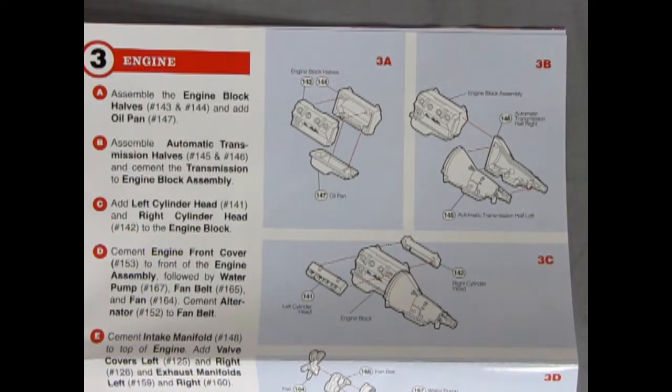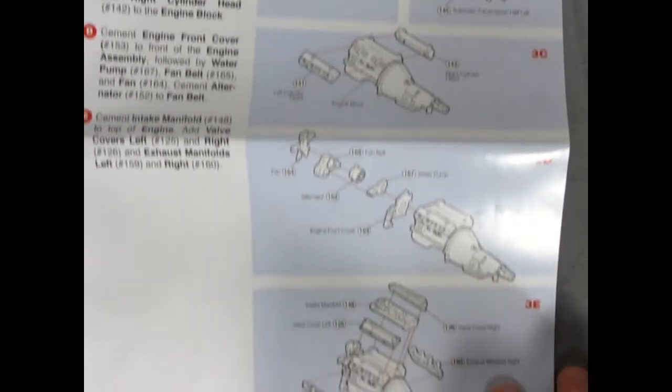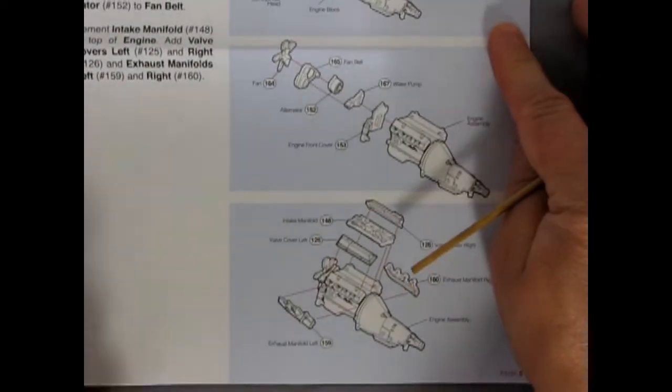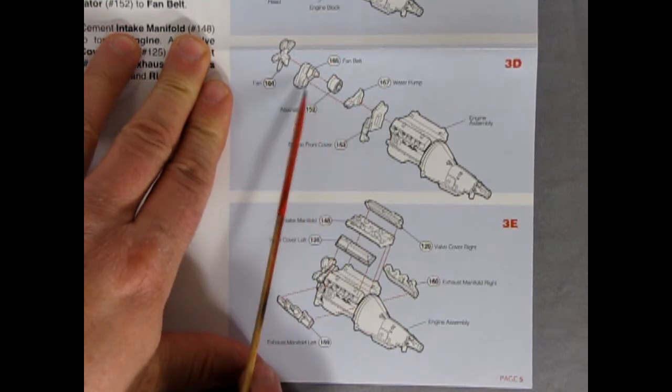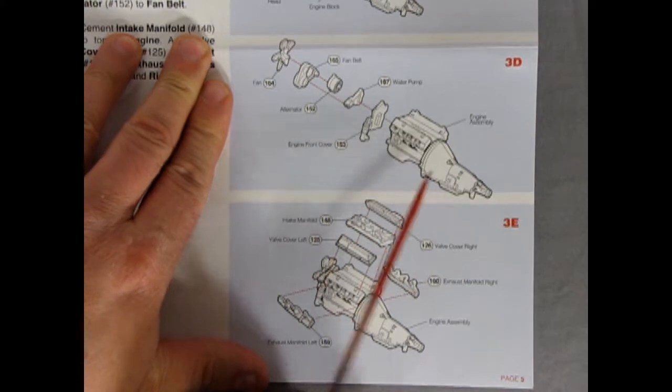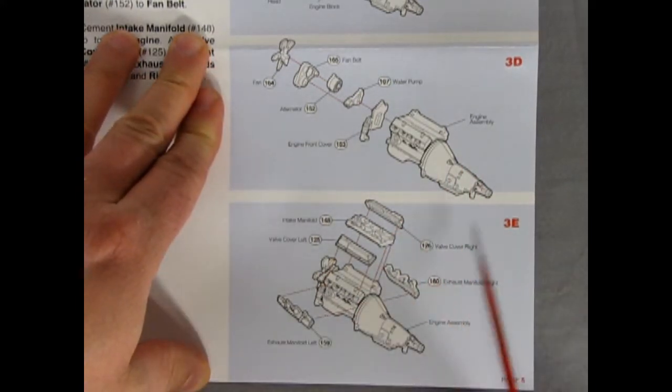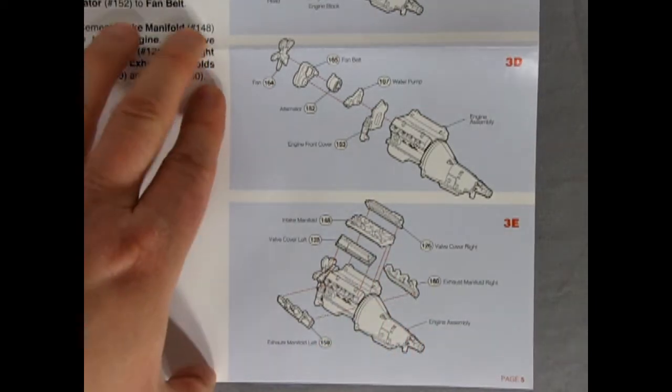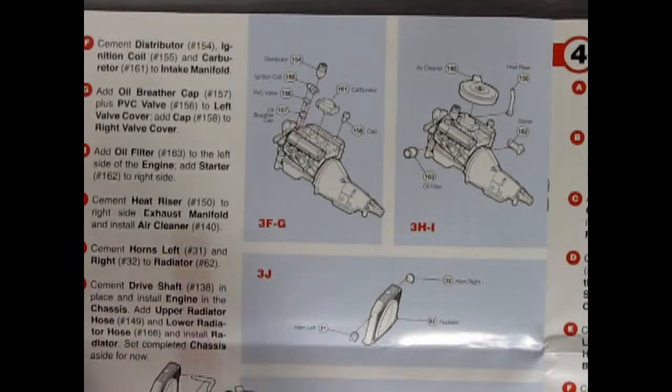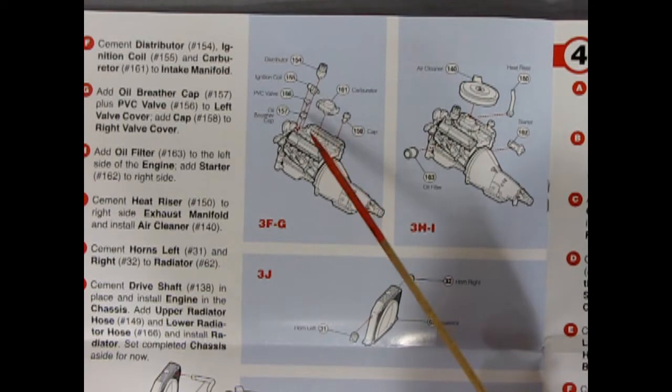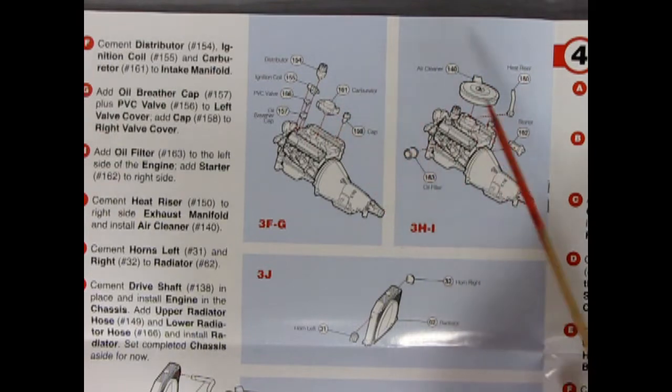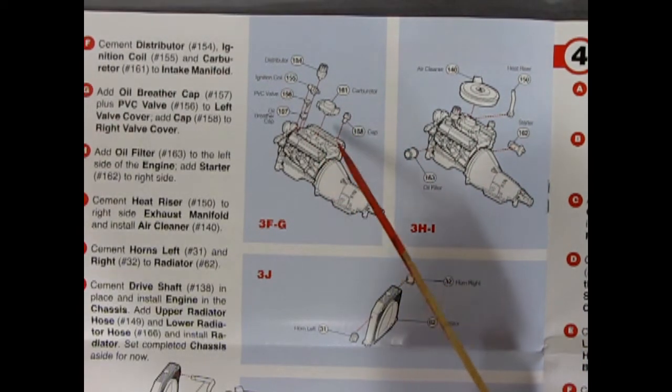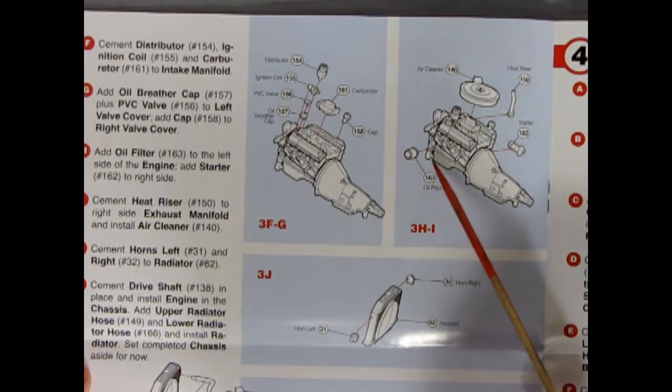We've got an automatic transmission for easy cruising going on the back, and then we've got our cylinder heads going onto that nice engine block. We have the fan going into the fan belts and pulleys, the alternator gluing behind, a water pump and our front engine cover. Then we've got our valve covers and our intake manifold as well as our right and left hand side exhaust manifolds. Our engine gets further completed with the distributor, our coil, our PVC valve which is pretty new for this era, and an oil breather cap.